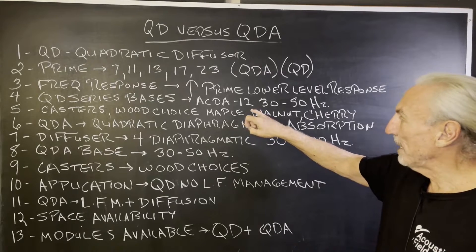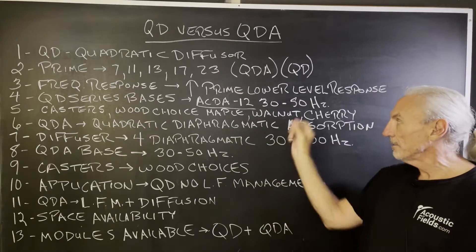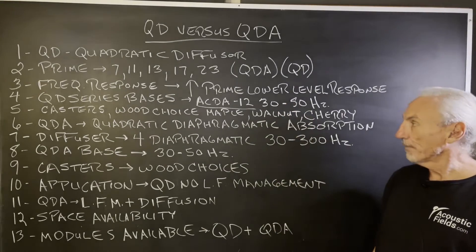The QD series has bases. Inside the bases is the ACDA12 technology, which is our big sponge, 30 to 50 cycles.